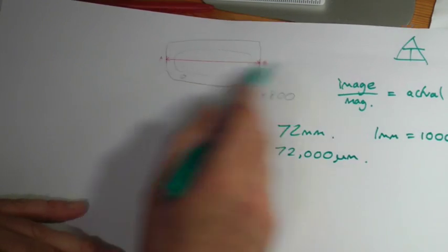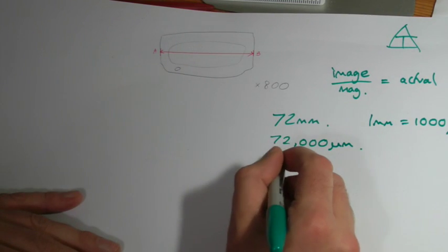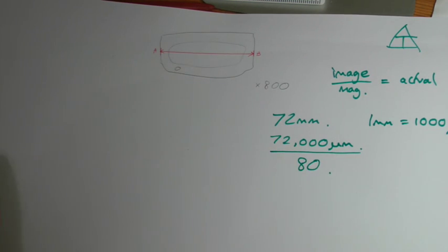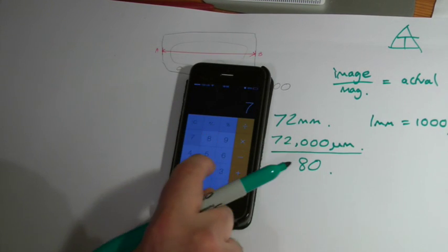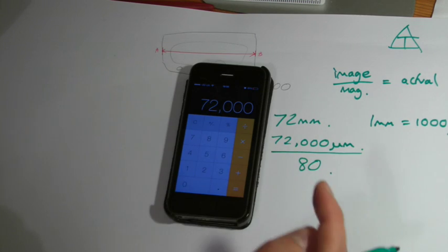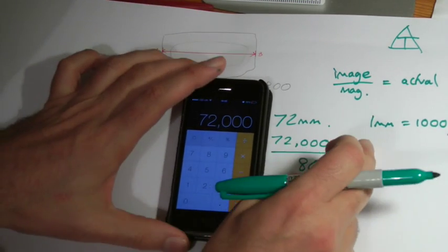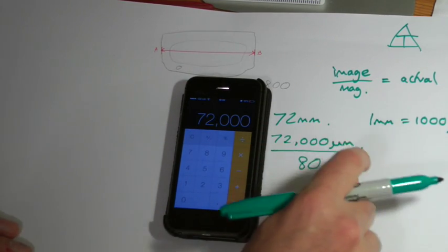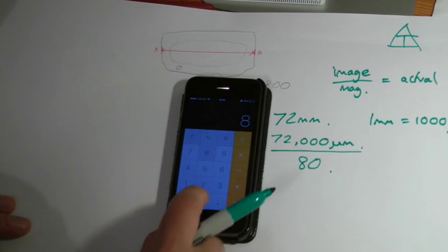That's the size of my image, the thing I can see. My magnification is 800. And now it's simply a case of putting the numbers together. So, 72 thousand micrometers across. Remember the size of the image, although I've measured it in millimeters first of all, I've converted it into micrometers.